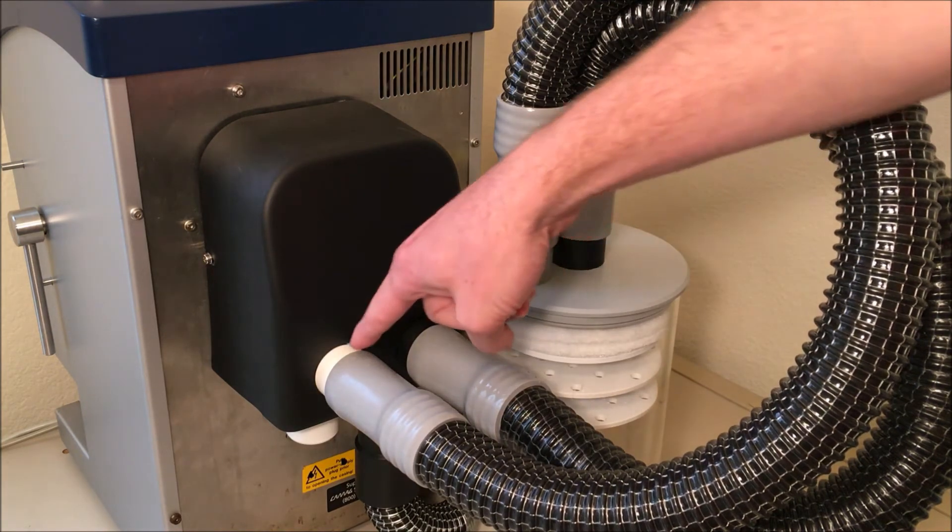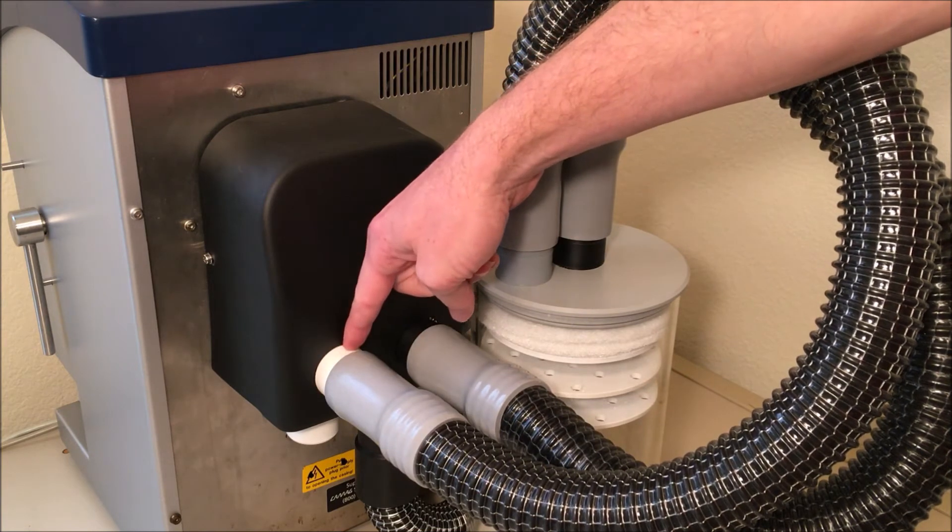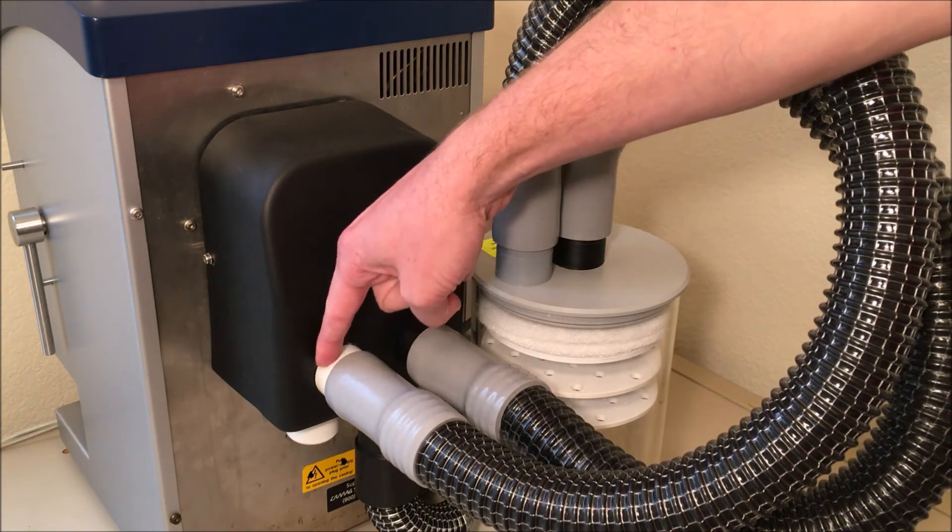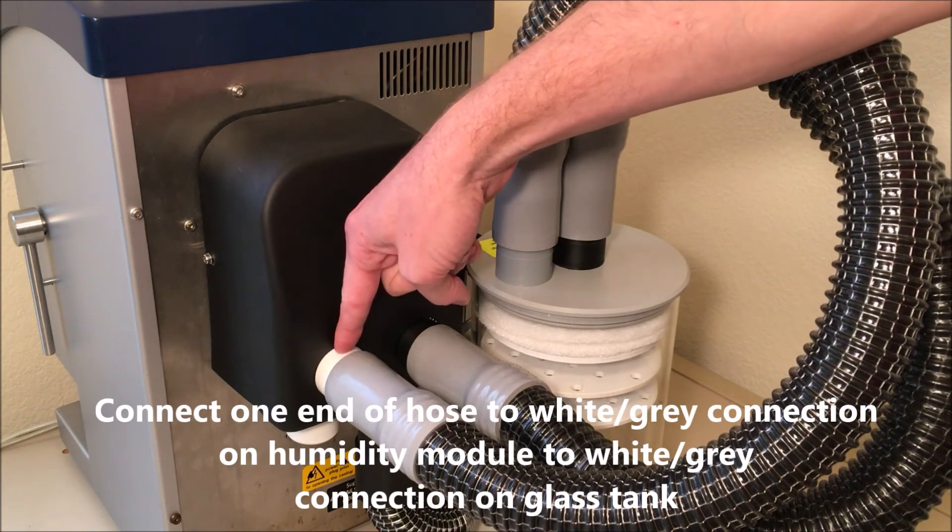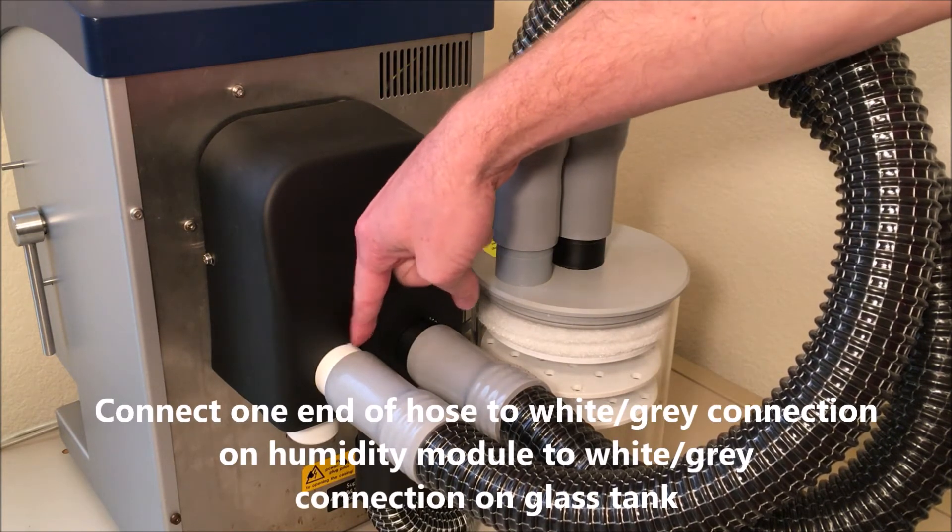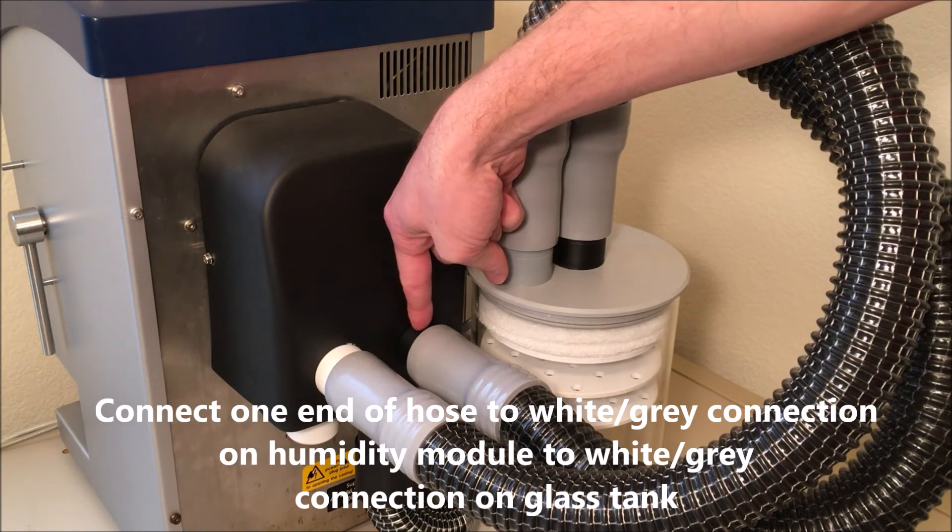So the first hose will connect to the left side here and you can see that it's actually color coded. So on this particular unit the left side is white, it may be grey on yours, and the right side is black.